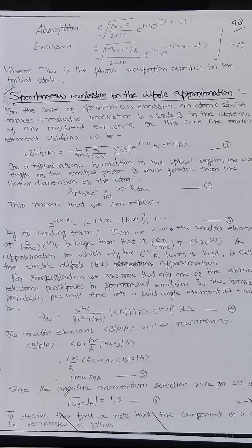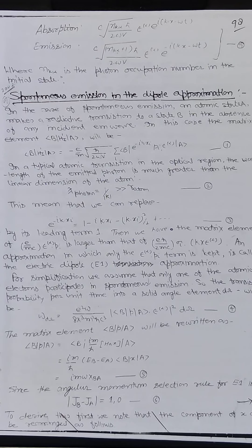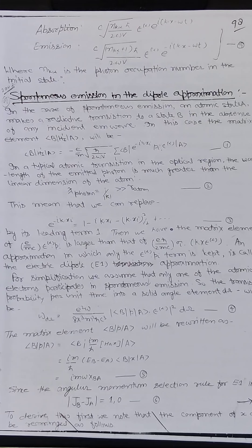In a typical atomic transition in the optical region, the wavelength of the emitted photon is much greater than the linear dimension of the atom — the wavelength λ̄ = 1/k is much greater than the radius of the atom. This means we can replace e^{-ik·x_i} by its expansion: 1 - ik·x_i - (k·x_i)²/2 + .... Keeping only the leading term, the matrix element of (e/mc) ε_α · p is larger than that of (eℏ/2mc) Σ_i k × ε_α. The approximation in which only the ε_α · p_i term is kept is called the electric dipole (E1) approximation.